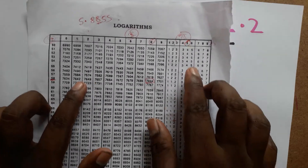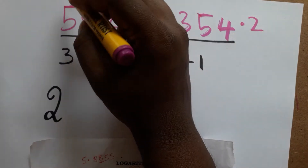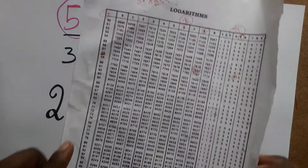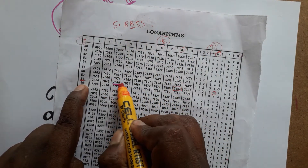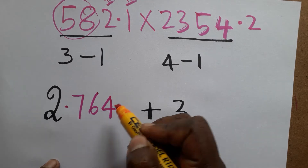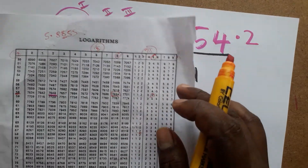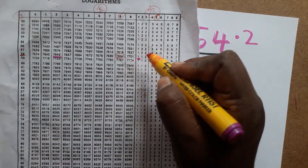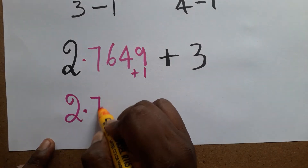The first two digits you look up in the first column, the third digit in the second column, and the fourth digit in the third column. I found 58 in the first column and 2 in the second column — they meet at 7649. The fourth digit is 1, so we look it up in the third tabular column and get a mean difference of 1, which we add to the last digit. So the mantissa is 0.7649, giving log(5821) = 2.7649.